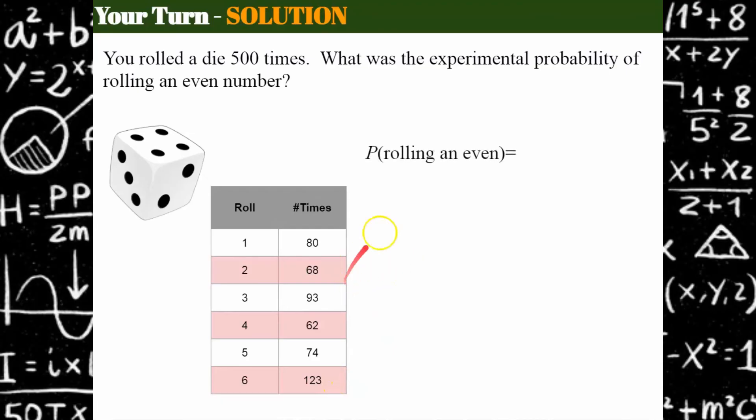We're going to add, this is the probability of rolling an even number, we're going to add 68, 62, and 123, and we get 253. I know I could add this whole column up, but they told us in the question that there were 500 times the experiment was conducted.